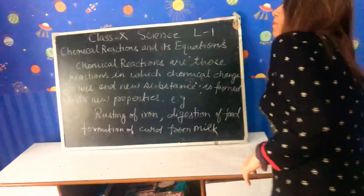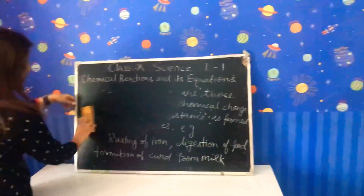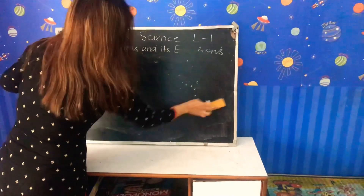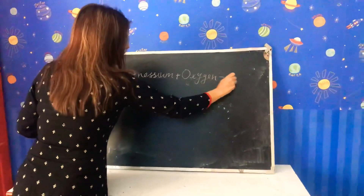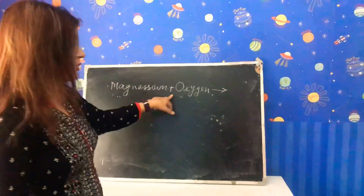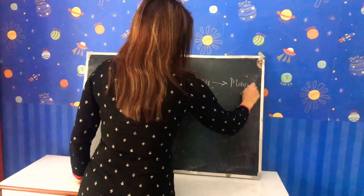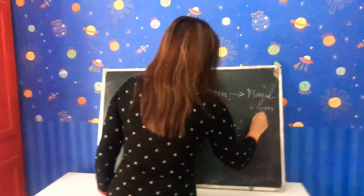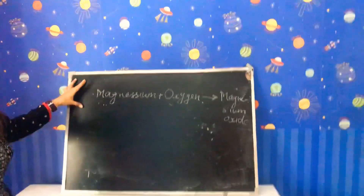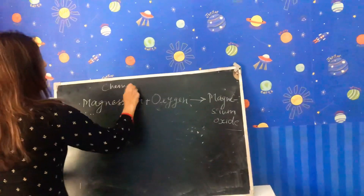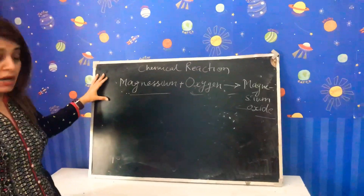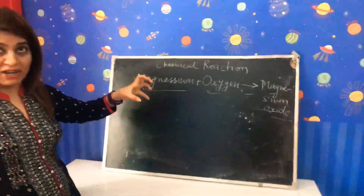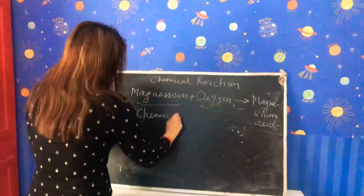Now, how do we represent chemical reactions? If we take a chemical reaction and want to present it, I will give you an example from everyday life. When magnesium is burnt, it reacts with oxygen and forms magnesium oxide — that is also a chemical change. Now, this chemical reaction, when we write it out in words many times, it is very time-consuming. So we write this chemical reaction in a short and symbolic form, and this short symbolic form is what we call a chemical equation.